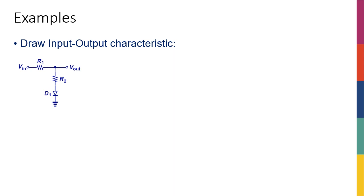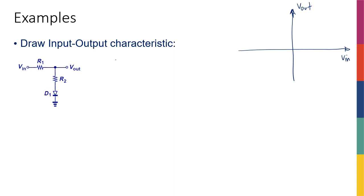Let's solve another example, this time trying to do it quicker. This circuit is given and the input-output characteristics are asked. I'm going to do the exact same thing: plot Vin on the x-axis and Vout on the y-axis, and sweep Vin from negative infinity to positive infinity. I'll start from the value that is going to turn off the diode, because when the diode is off I have an open circuit and things become extremely simple.